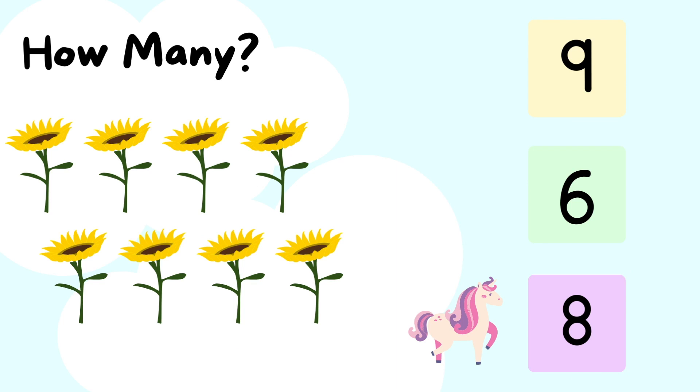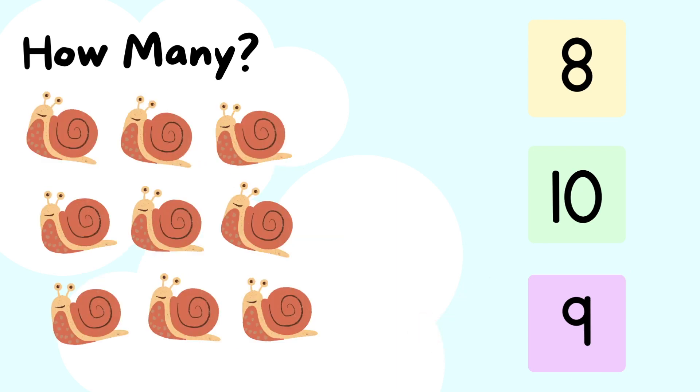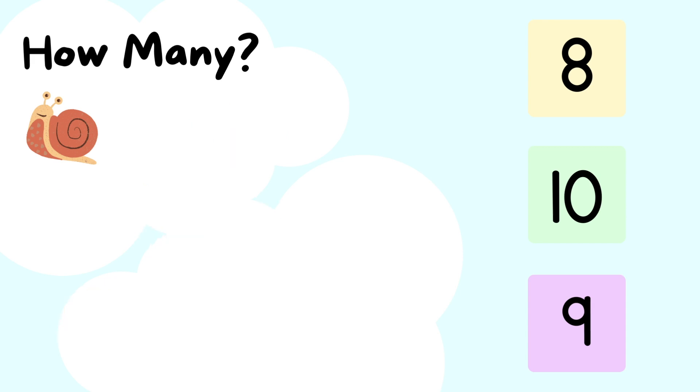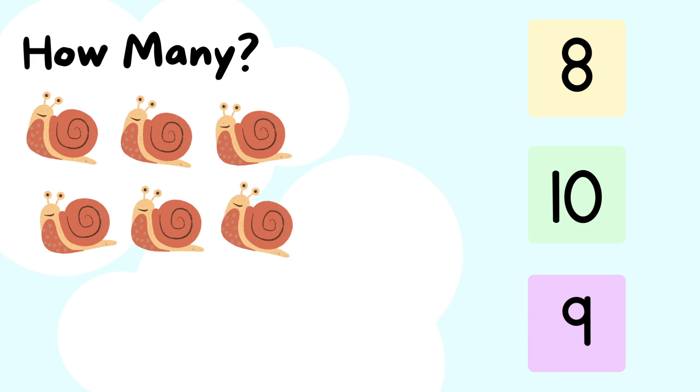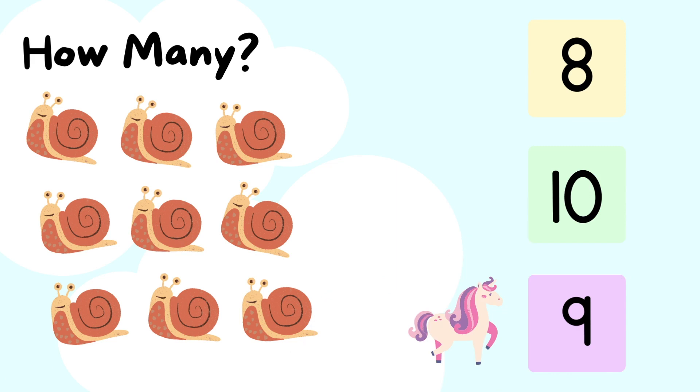Let's try to count faster this time. How many snails do you see? One. Two. Three. Four. Five. Six. Seven. Eight. Nine. There are nine snails.